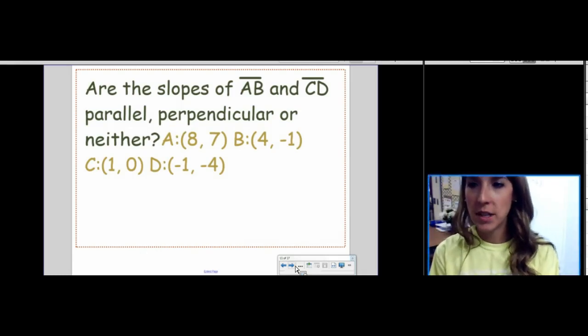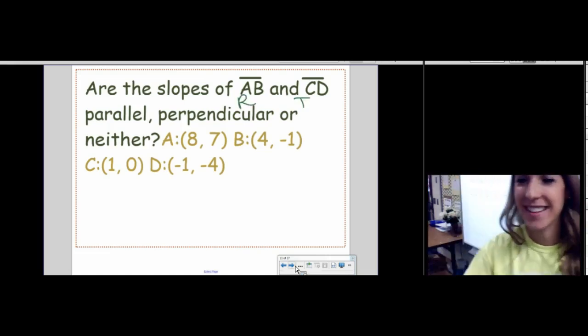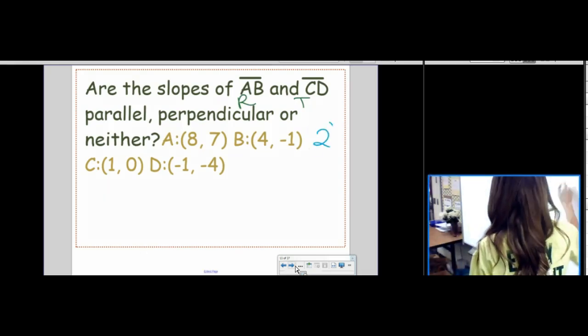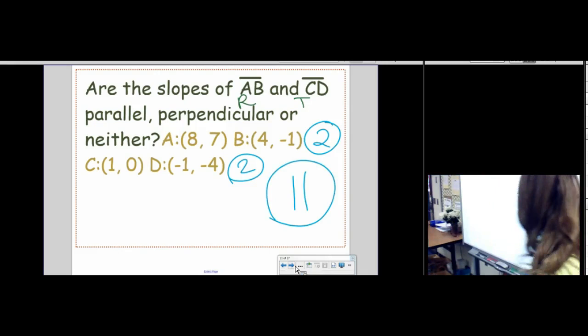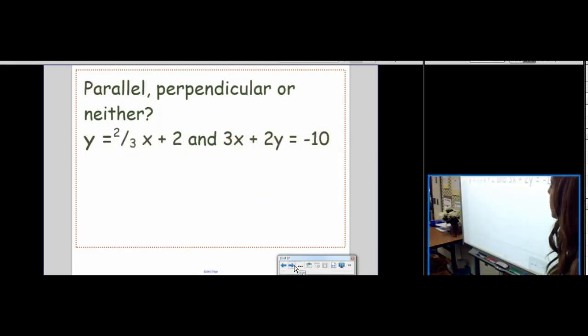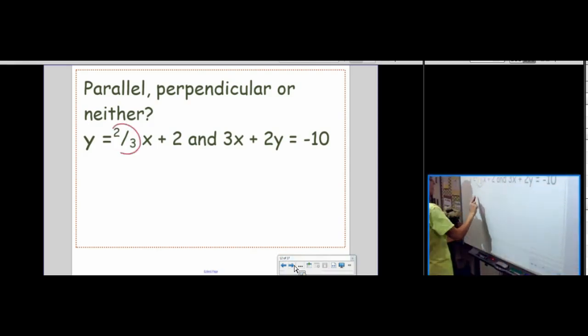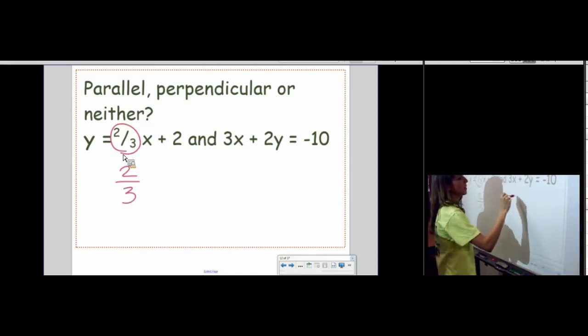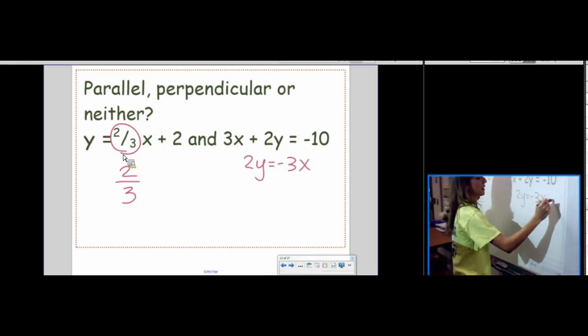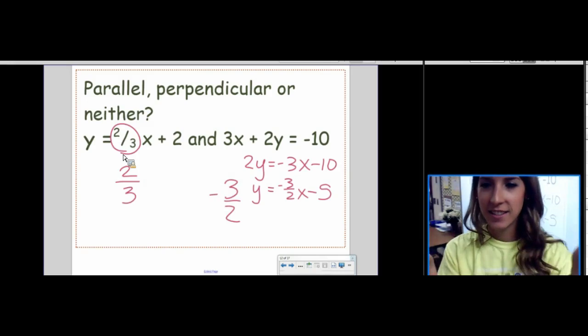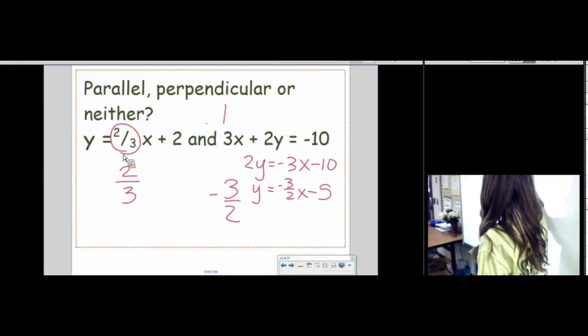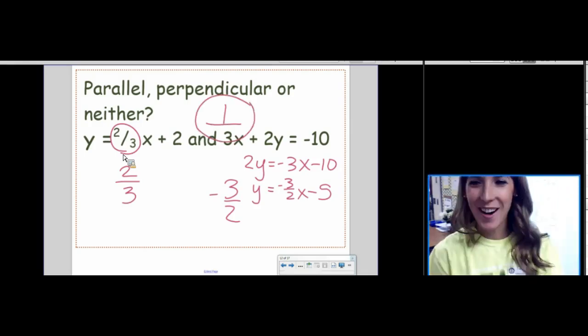Same question. Are the slopes of segment AB and segment CD parallel, perpendicular, or neither? All right. So, the slope of AB ended up being 2. The slope of CD ended up being 2. And we are at a conclusion of parallel once again. Parallel, perpendicular, or neither? The slope of this one is 2. The slope of this one, let's see. 2Y equals negative 3X minus 10. Y equals negative 3 halves X minus 5. Conclusion. Everybody? Perpendicular. Perpendicular. Perpendicular. Opposite reciprocals.